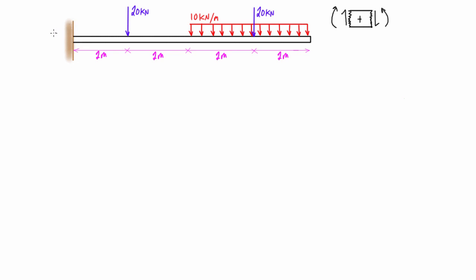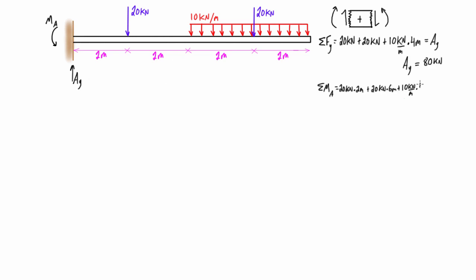This will differ from the last couple of examples because we're going to get a reaction moment here. We'll call that MA, which means that the internal bending moment on the left-hand side will not be zero like it was with simply supported beams. We also have a vertical reaction AY, and it turns out that AY is equal to 80 kilonewtons and MA is equal to 400 kilonewton meters.